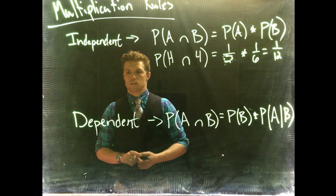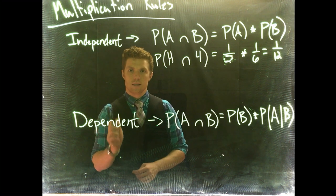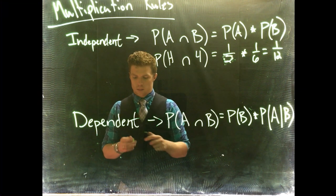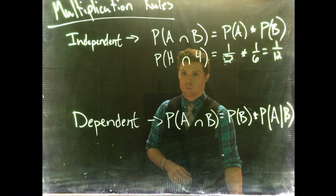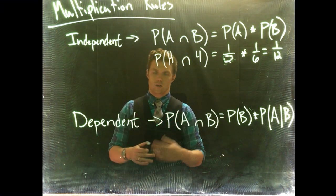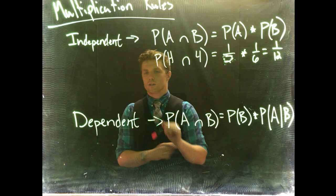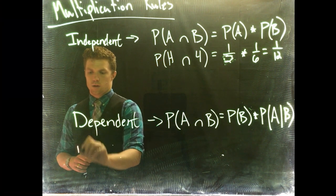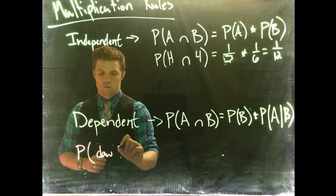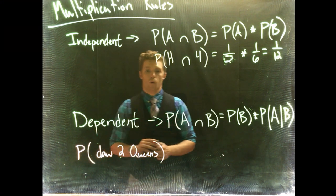Let's talk about two examples — one independent and one dependent — and they're going to be very close to the same problem. We'll talk about the difference between sampling with replacement and sampling without replacement using a deck of cards. A standard deck has 52 cards with four suits and various numbers and royalty. We want to know: what's the probability of drawing two queens?